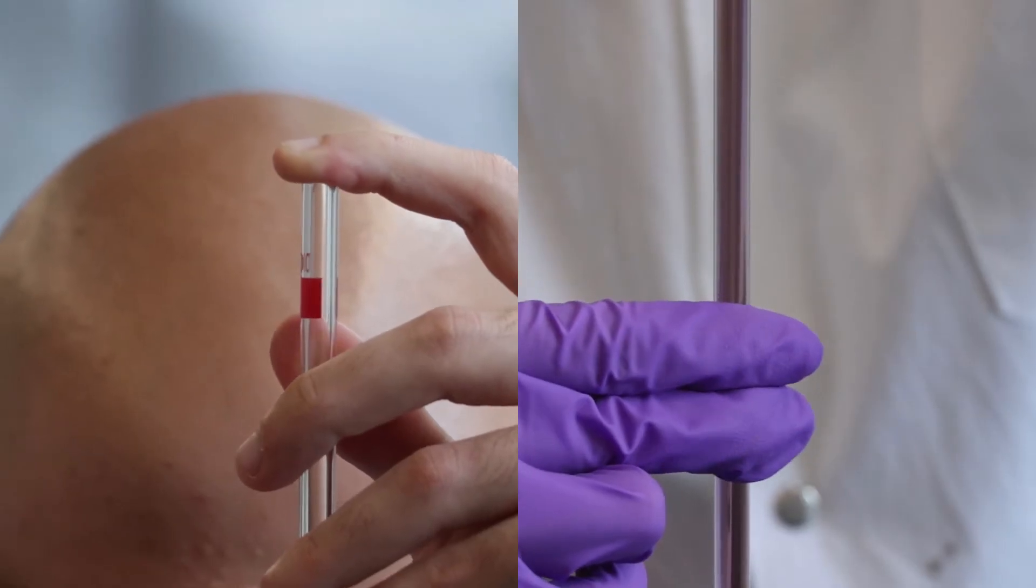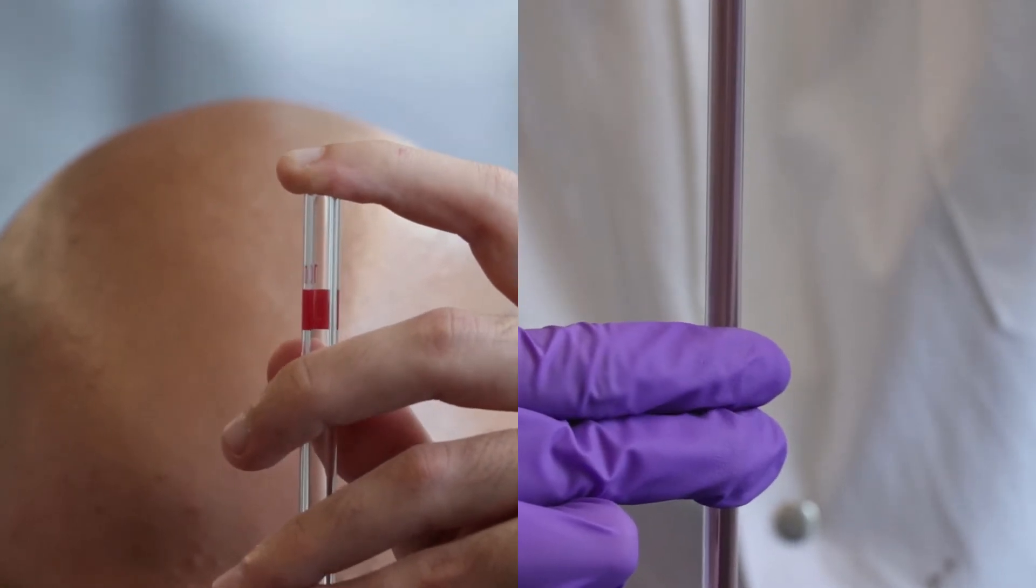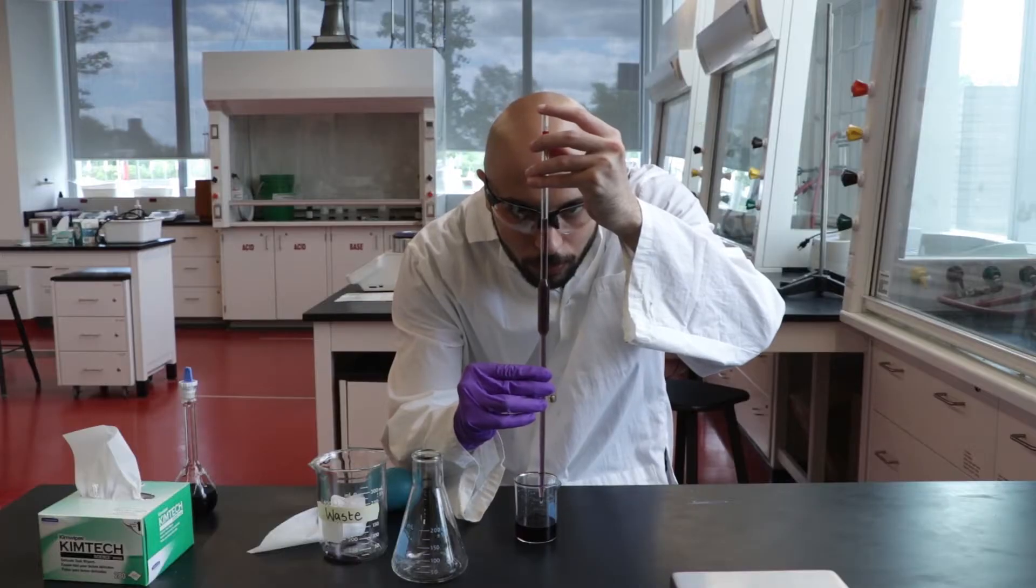Carefully and slowly adjust your index finger while twisting the pipette to release the liquid until the bottom of the meniscus rests on the etched mark. This will take some practice.